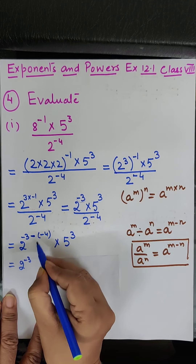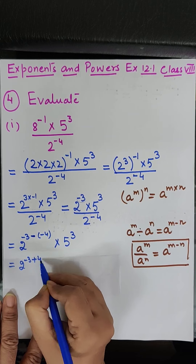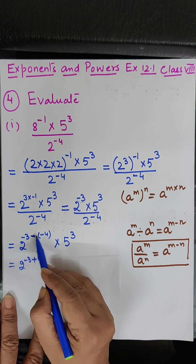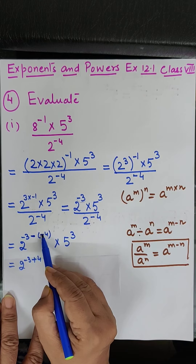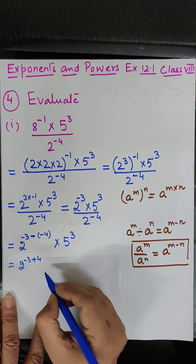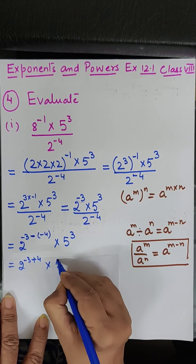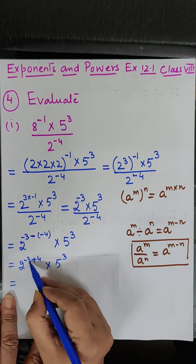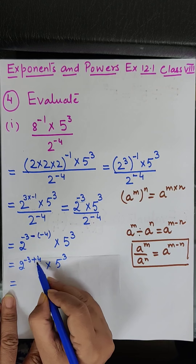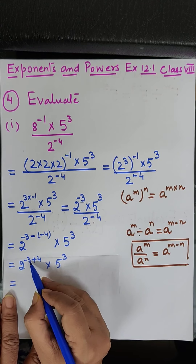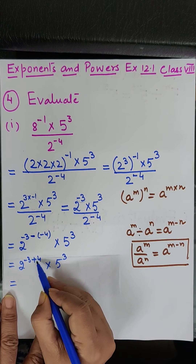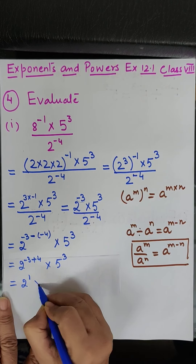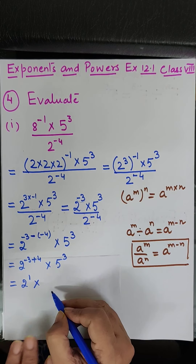So this becomes 2 to the power minus 3, and minus minus 4 is plus 4, so we have minus 3 plus 4, into 5 to the power 3. Solving, minus 3 plus 4 gives us 1, so this is 2 to the power 1 into 5 to the power 3.